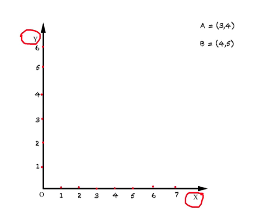Why are they called X and Y? Simply by convention. What we do is we draw these lines, join them, and wherever these two axes or lines meet you have the point of origin. Then you divide each of the X and Y axes into parts and label them: 1, 2, 3, 4, and so on.